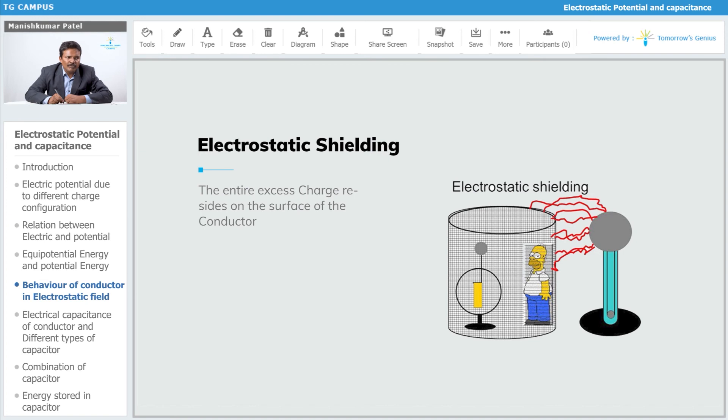So that is the concept of electrostatic shielding. In the case of a thunderstorm, it is good to sit inside a bus or car which has a metal covering. The electric field can't penetrate through it, so you are safe inside.